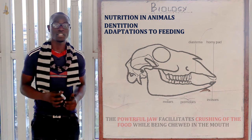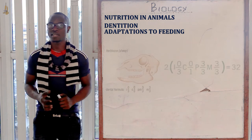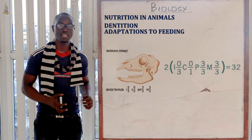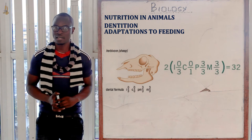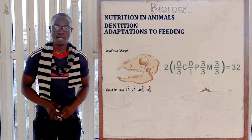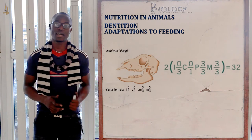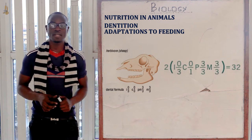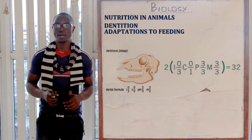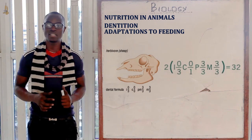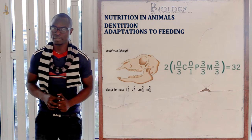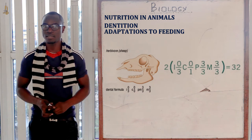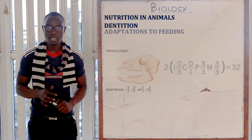As an example of a herbivore, the sheep has the dental formula: I 0/1, C 0/1, M 3/3, giving a total of 32 teeth.